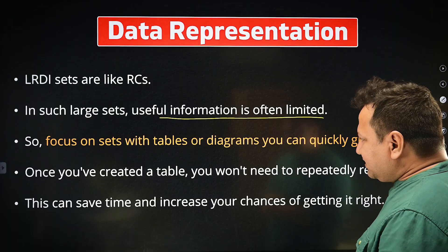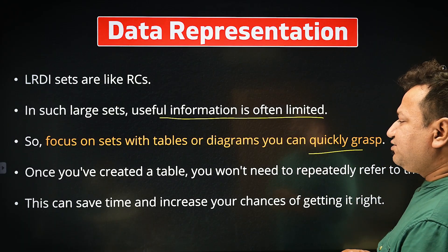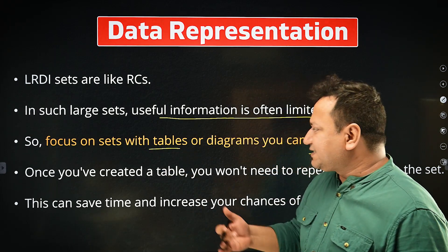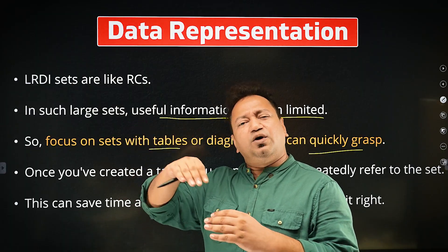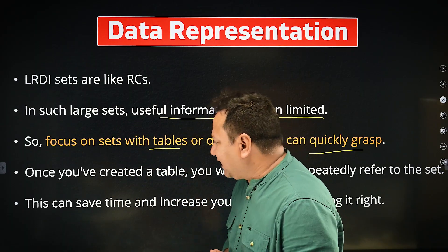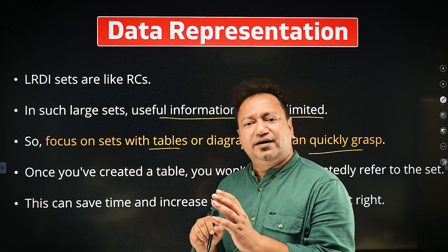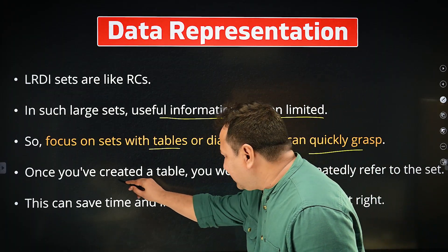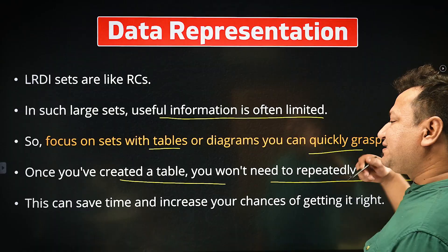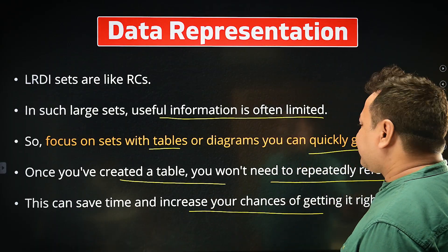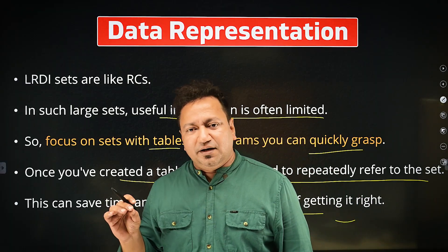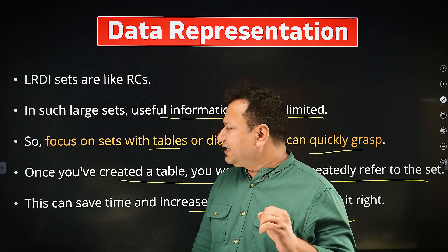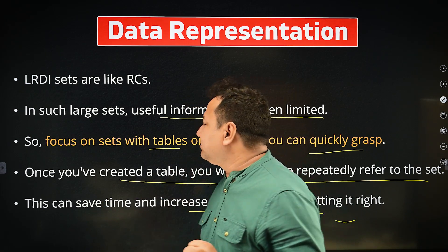Focus on sets with tables or diagrams that you can quickly grasp. If tables are already there, it's good to go. For LR sets — specifically LR, not DI — you need to note down data, and doing it in a table makes life easier. Once you've created a table, you won't need to repeatedly refer back to the set, which saves time and raises your chances of getting it right. Even saving five seconds per question makes 25 seconds across five questions.